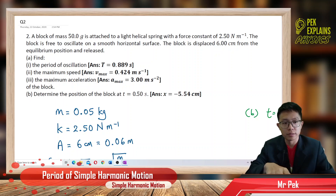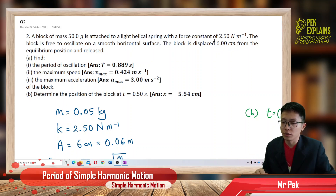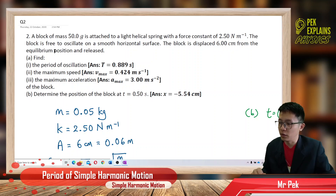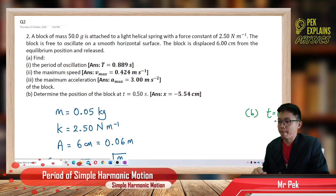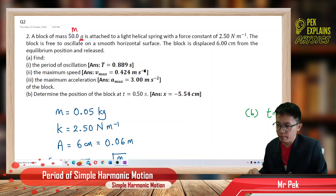Question number two: for periods of simple harmonic motion, a block of mass 50 grams is attached to a light helical spring with a force constant of 2.5 newton per meter. The block is free to oscillate on a smooth horizontal surface. The block is displaced 6 centimeters from the equilibrium position and released. Note: the mass is in grams, not kilograms, so we need to convert it. We have the mass and the force constant k.